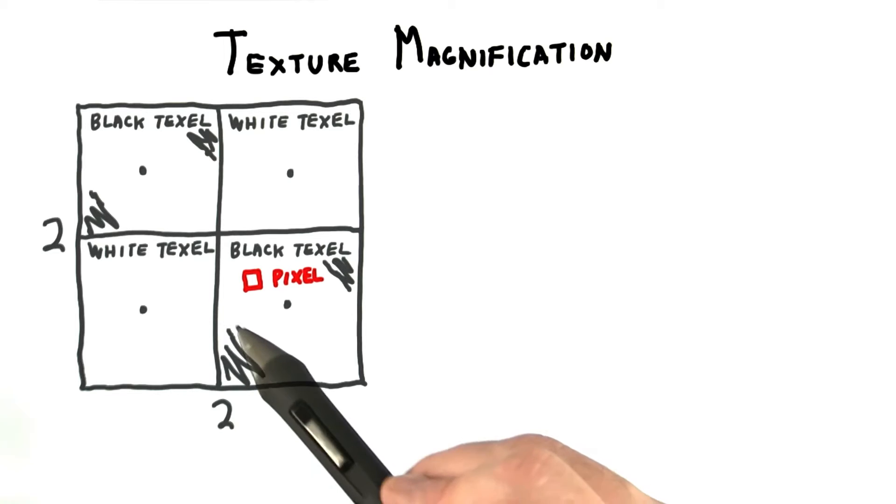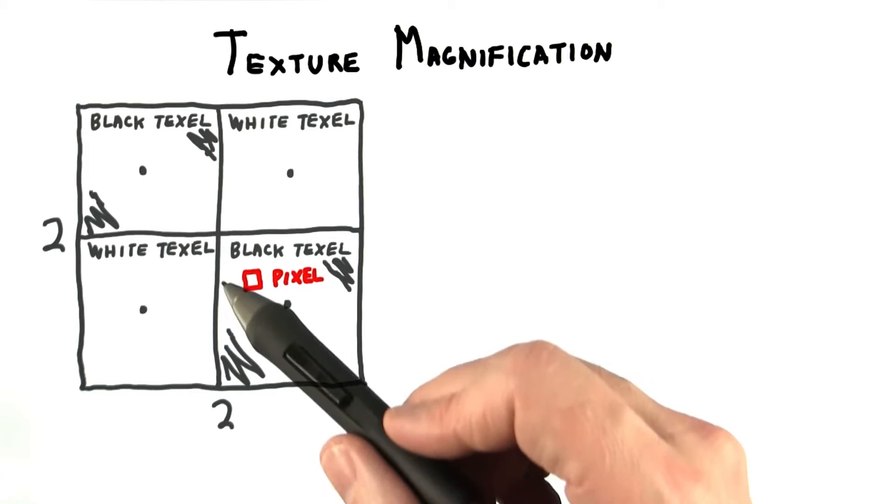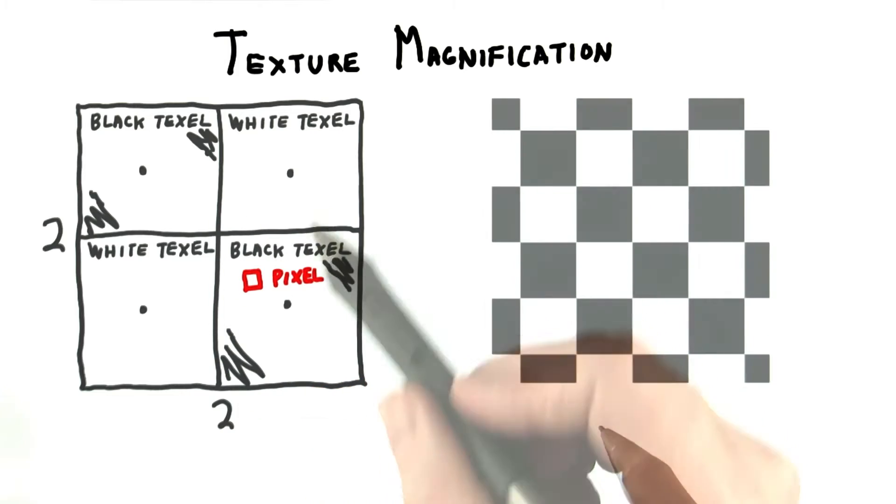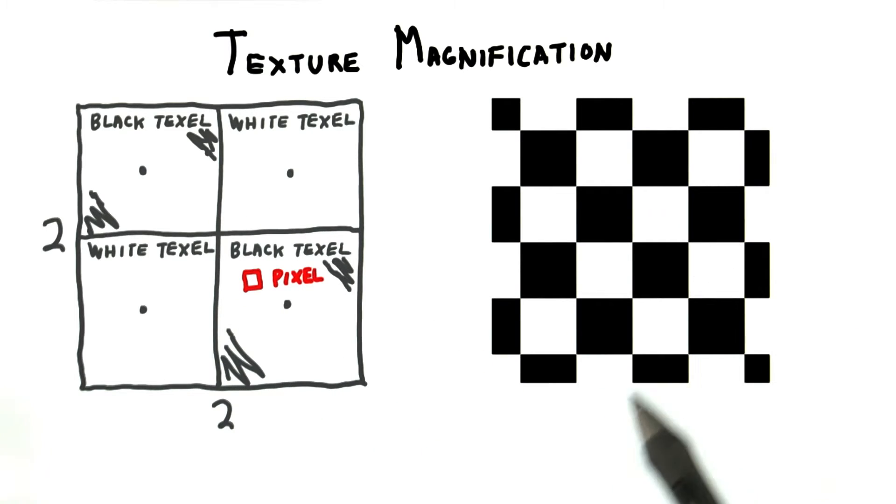There are now many pixels all sampling the same texel. The obvious answer is that you want this texture to continue to look like a checkerboard, with a sharp edge between the squares. In other words, you want something like this, nice and crisp.